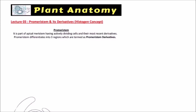Welcome to Studio Biology. In this video, I am going to discuss the Promeristem and its derivatives, that is the histogen concept. A Promeristem is part of the apical meristem having actively dividing cells and their most recent derivatives. This Promeristem differentiates into three regions which are termed as Promeristem derivatives.